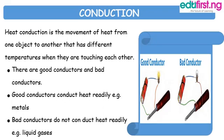Heat conduction is the movement of heat from one object to another that has different temperatures when they are touching each other. In this form of heat transfer, the objects need to come in contact. There are good conductors and bad conductors. Good conductors are materials that can conduct heat easily — for example, metals. All metals are good conductors.